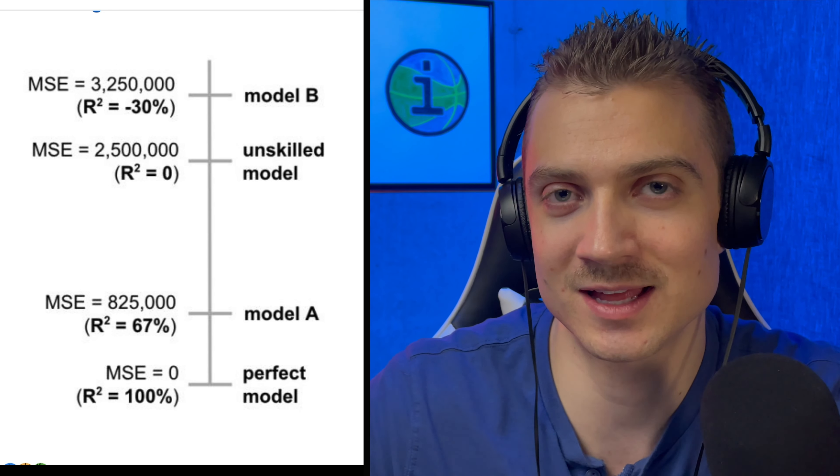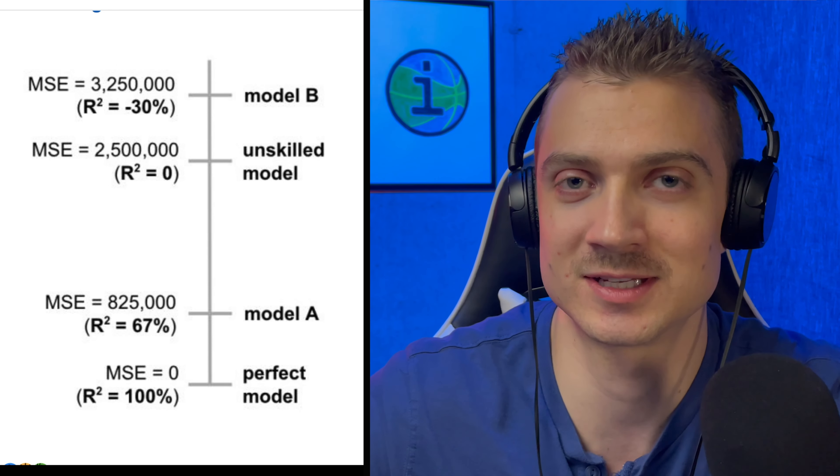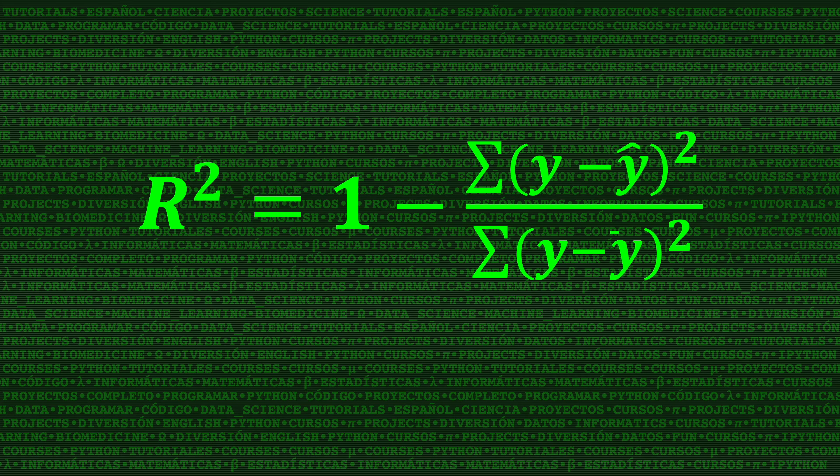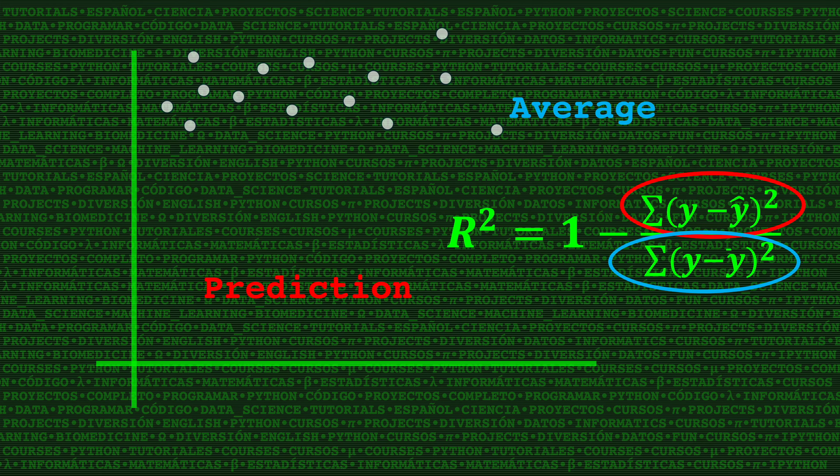This can happen when your model's predicted values are so far away from the actual y-values that drawing a straight line of the average of those outcome values is actually just a better prediction. Translation: your model is terrible, and just guessing the average is actually a better model than the model that you've created.